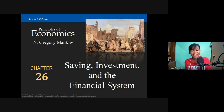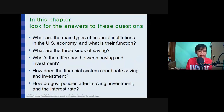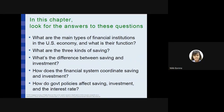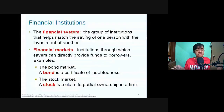Welcome to our discussion on saving, investment, and the financial system. In this chapter we'll tackle the types of financial institutions in the U.S. economy, their functions, the three kinds of saving, the difference between saving and investment, and how the financial system coordinates saving and investment.